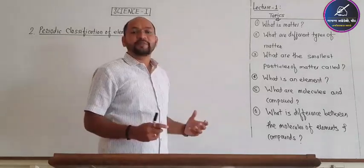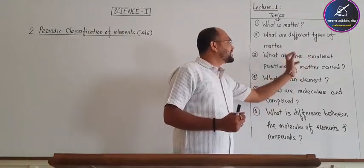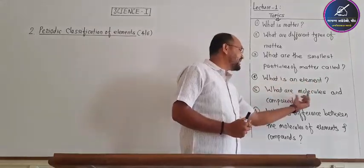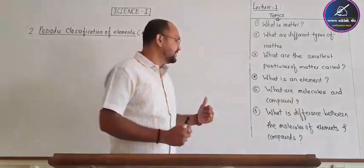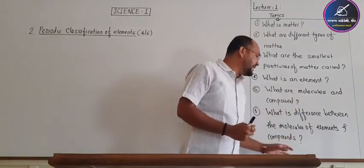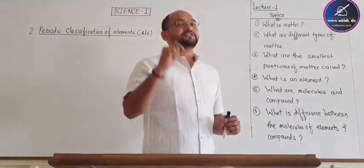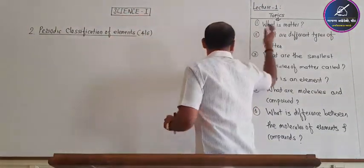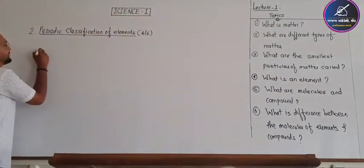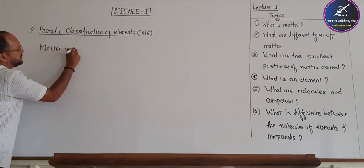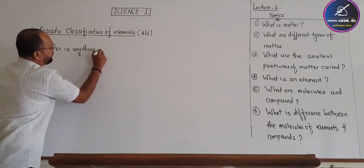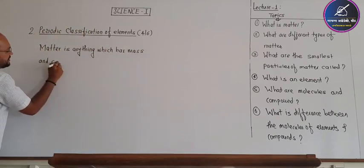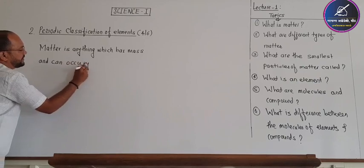There are different types of matter. Matter is the smallest particle — but first, what is matter? Matter is anything which has mass and can occupy a space.